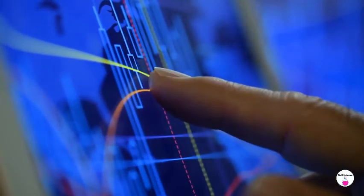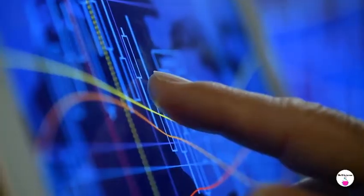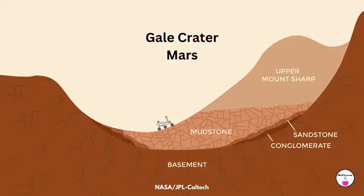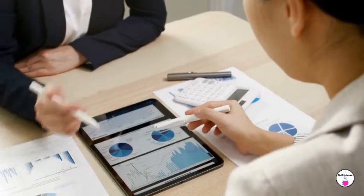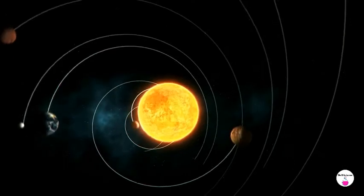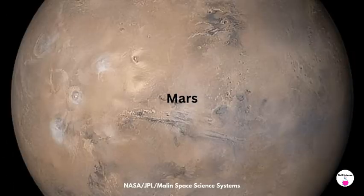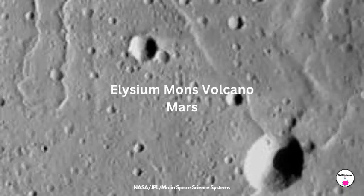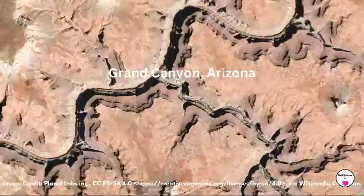Scientists collect data about these scale properties, including statistical information, photographs, models and drawings. They analyze and interpret this data to determine the similarities and differences among the objects in our solar system. For example, by analyzing photographs taken by spacecraft, scientists can identify extensive surface features such as volcanoes and canyons on other planets and compare them to similar features on Earth.